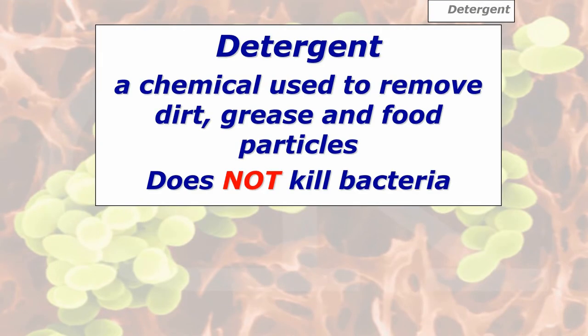The chemical we use for cleaning is a detergent — a chemical used to remove dirt, grease, food particles, and grime. It does not kill bacteria, and please remember that because a lot of people get it wrong. We need to use another product in order to kill bacteria, because we might be working with a food preparation board where we've cleaned it using the detergent, but there might still be bacteria present.